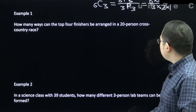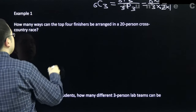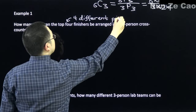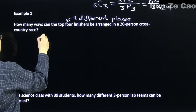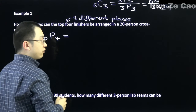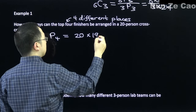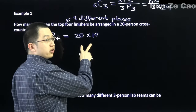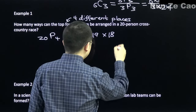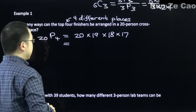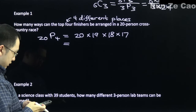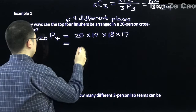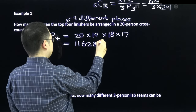How many ways can the top 4 finishers be arranged in a 20-person cross-country race? Since there are 4 different places, this is a permutation: 20P4 = 20 × 19 × 18 × 17 = 116,280 ways.